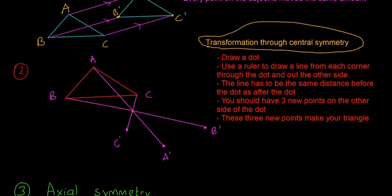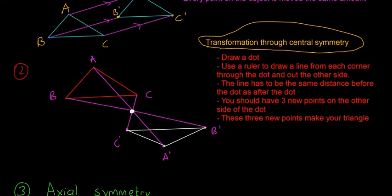Now we should have three new points, and these three new points make our triangle. So I'm going to draw this triangle in white between these three dots — A dash, B dash, and C dash — and we should have pretty much the exact same triangle, just flipped upside down. That's called transformation through central symmetry, and that dot in the middle is the center of symmetry.